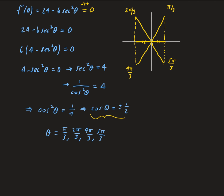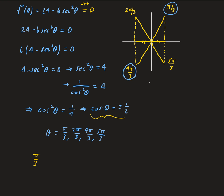Starting with pi over 3: if we add pi to pi over 3, we get 4 pi over 3. Continuing to add pi, we get 7 pi over 3, then 10 pi over 3, and so on. So this family can be written as theta₁ equals pi over 3 plus n pi, where n is an integer.